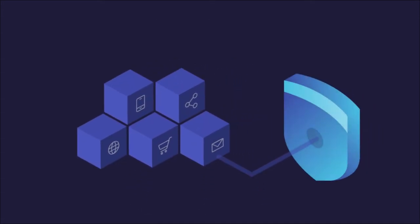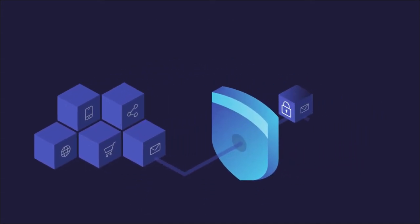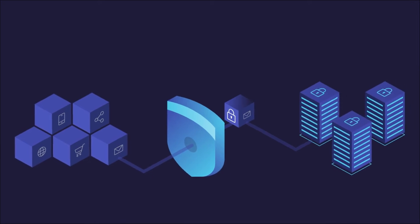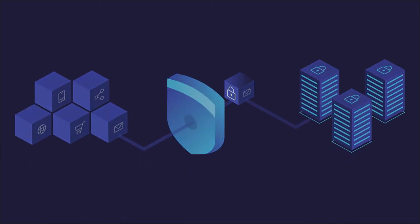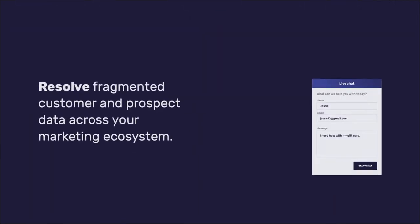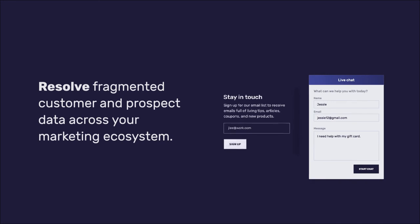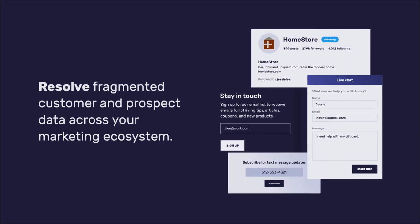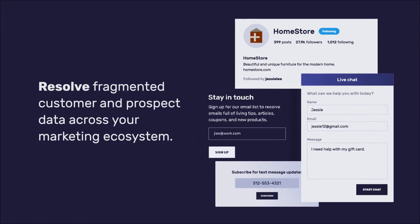HomeStore's customer and prospect datasets are securely loaded into their private identity cloud, which can accept identifiers including name and address, mobile ad IDs, emails, phone numbers, hashed emails, social URLs, and more.